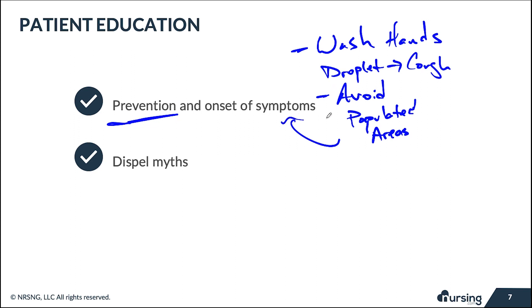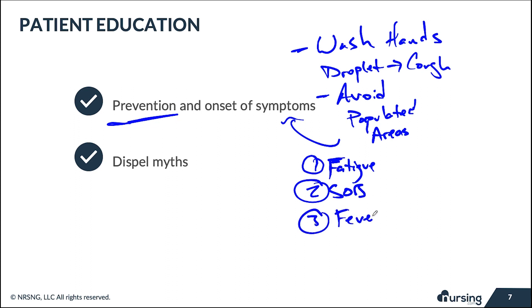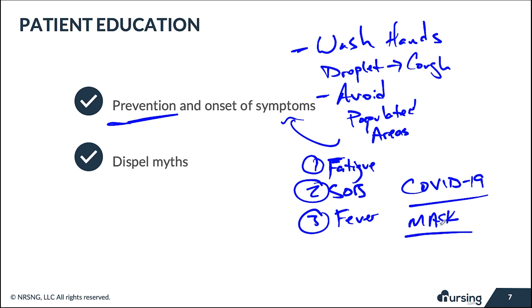If a patient presents with the onset of key symptoms — fatigue, shortness of breath, and fever — and has been exposed to an area with COVID-19, give them a mask and direct them to seek medical care. Whether it's someone you know or a patient, get them a mask and have them seen by a provider or sent to the hospital for testing.